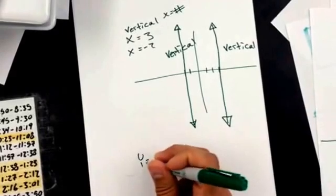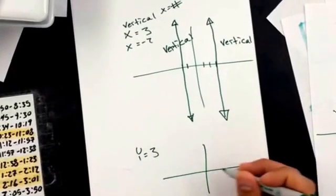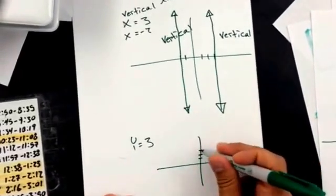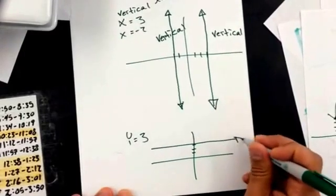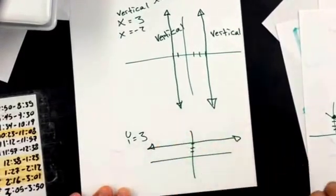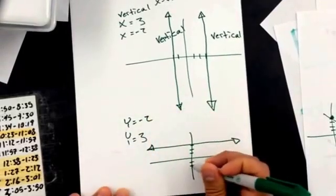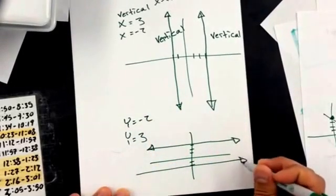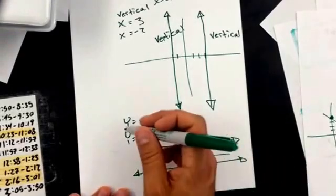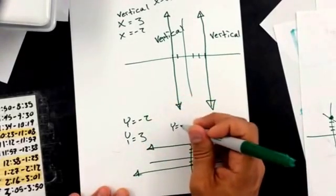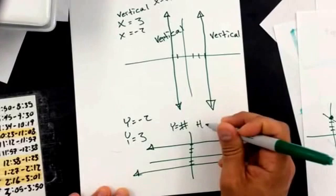If it tells me y equals 3, go to right here, and I make a straight across line, which is horizontal. If it tells me y equals negative 2, go to right here, make a straight across line, horizontal. So that means every single time it tells me y equals some number, it's going to be horizontal.